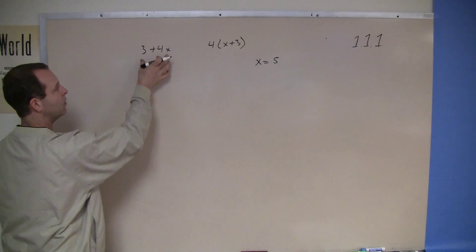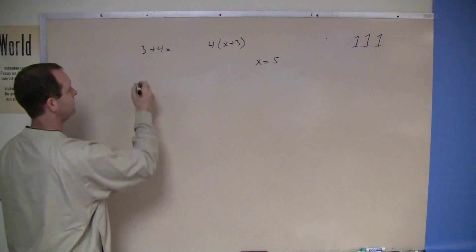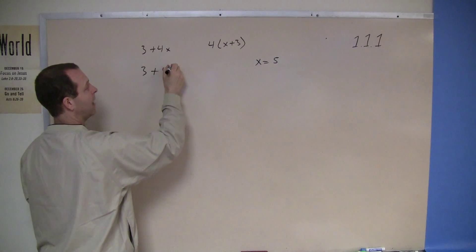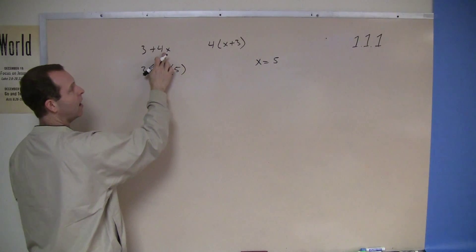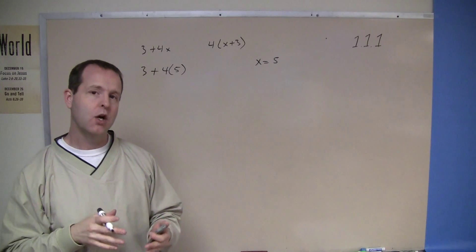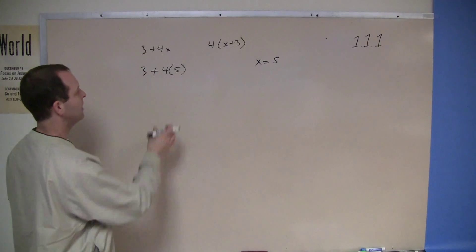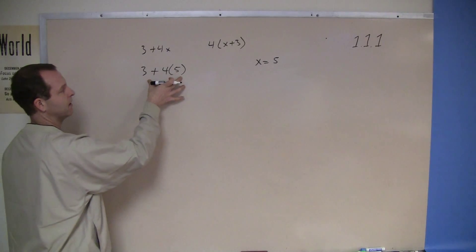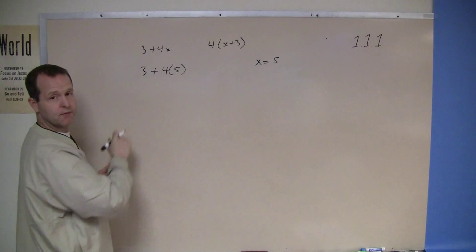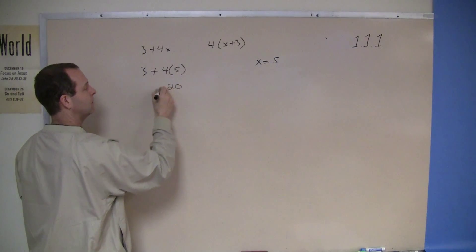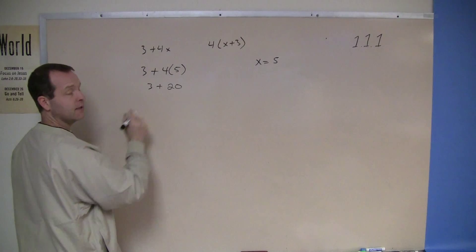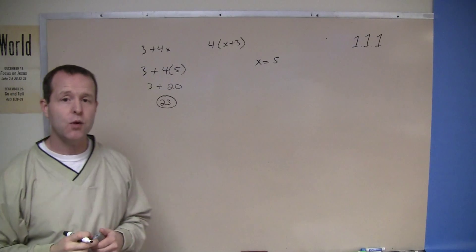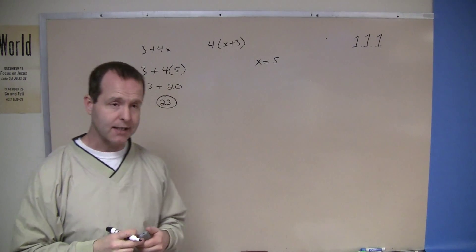So I'm going to rewrite 3 plus 4x, but where I have the x, I'm going to insert the value 5. I know by context that's 4 times the x, or 4 times the 5. So I put parentheses around that 5 just to make sure I remember the order of operations. So 3 plus 4 times 5: 4 times 5 is 20, then 3 plus 20 is 23. That expression evaluated at x equals 5 is 23.